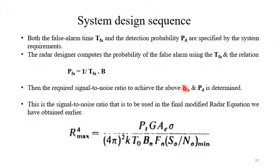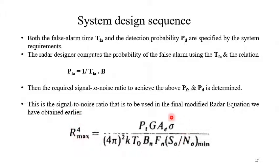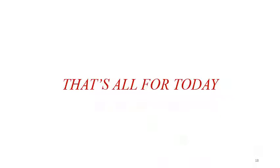In the system design sequence, both the false alarm time T_FA and the detection probability P_D are specified by system requirements. The radar designer computes the probability of false alarm using P_FA = 1/(T_FA · B), then determines the required signal-to-noise ratio to achieve the specified P_FA and P_D. This signal-to-noise ratio is then used in the final modified radar equation to obtain the maximum range R. That concludes today's lecture — see you in the next class.